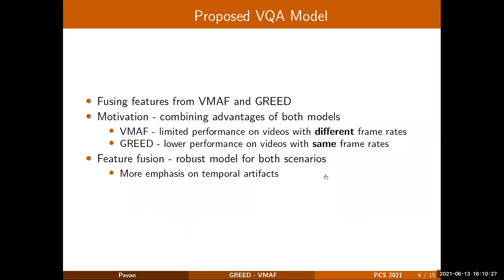The proposed model is an extension of our previous work where we had proposed a generalized entropic difference model, GREED, to account for frame rate artifacts. In this work, we extend that to include features from both VMAF and GREED. The motivation behind using this feature fusion model is to take advantage of both models. VMAF has good performance when videos of the same frame rate are compared, while GREED has good performance when videos of different frame rates are compared. Thus, fusing these features can result in a more robust model for both scenarios, and this fused feature set gives more emphasis on temporal artifacts which is absent in current VQA models.